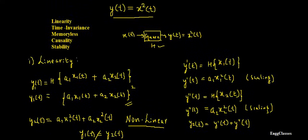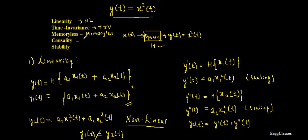To summarize all five properties tested for the system y(t) = x²(t): the system is non-linear, time invariant, memoryless, causal, and stable. Thanks for watching.